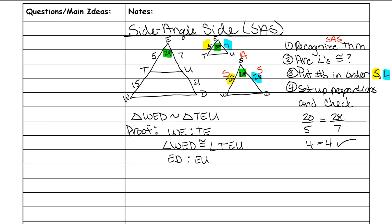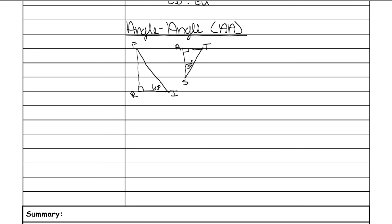There is one more theorem — angle-angle. For angle-angle, you just have to prove that two angles are congruent. If two angles are congruent, the third angle is also going to be congruent since they all have to equal 180 degrees. Here is an example of angle-angle similarity. You are given the 90-degree angle on each triangle, but the other two angles given are 60 and 30, and those don't match. We need to figure out the missing angle: 180 minus 60 leaves us with 30 degrees, so it's a 30-60-90 triangle, meaning the missing angle would be 60 as well — so they are congruent.